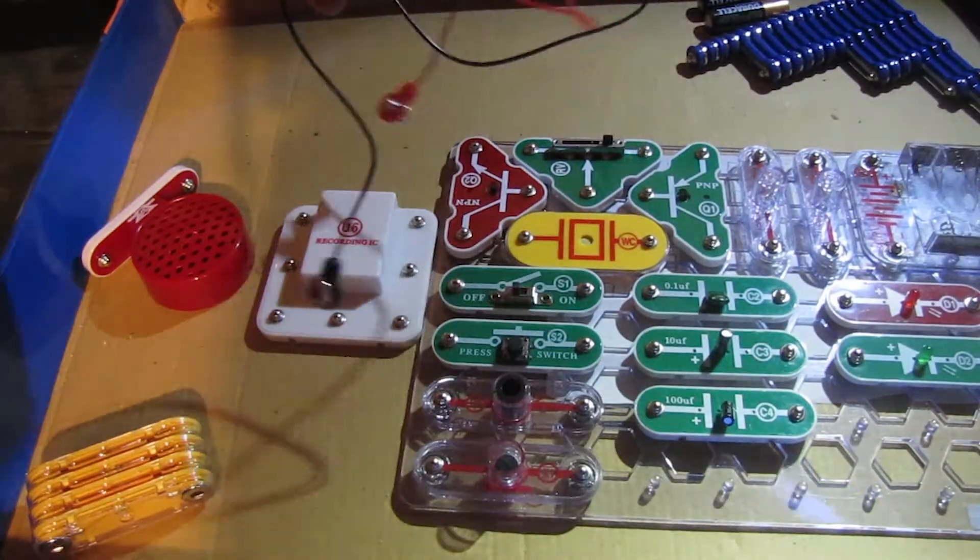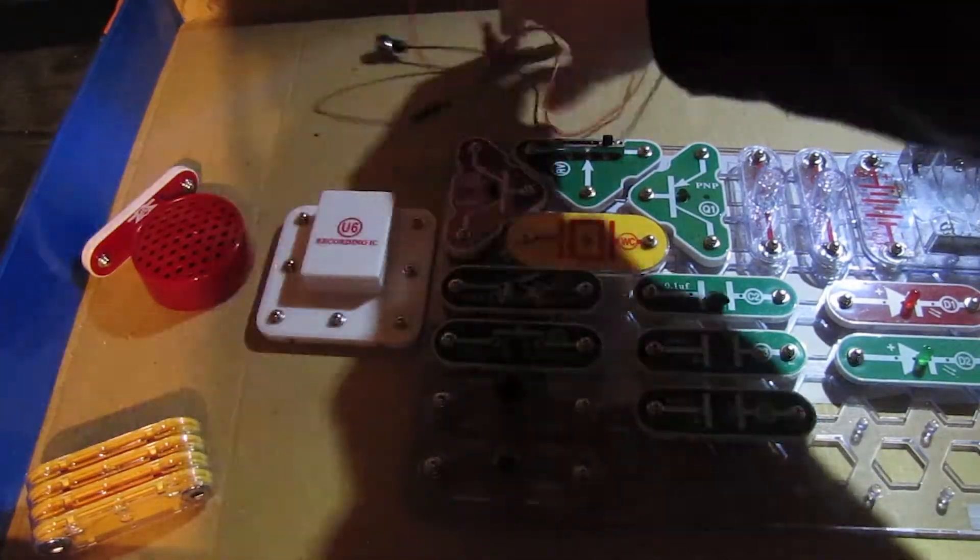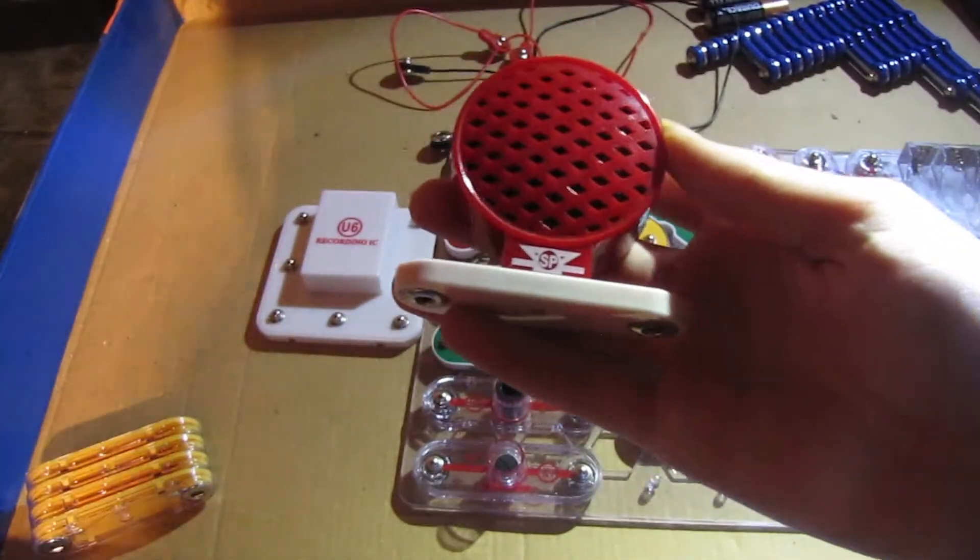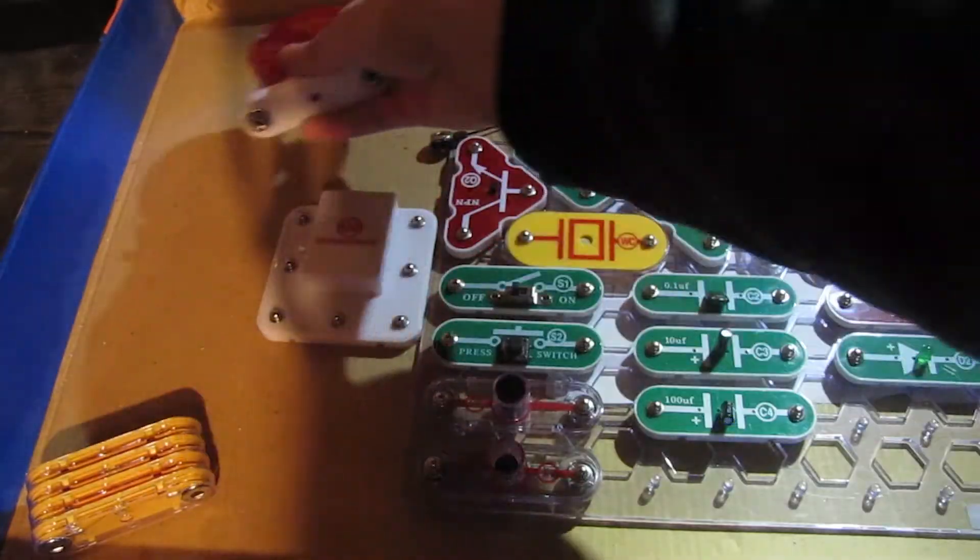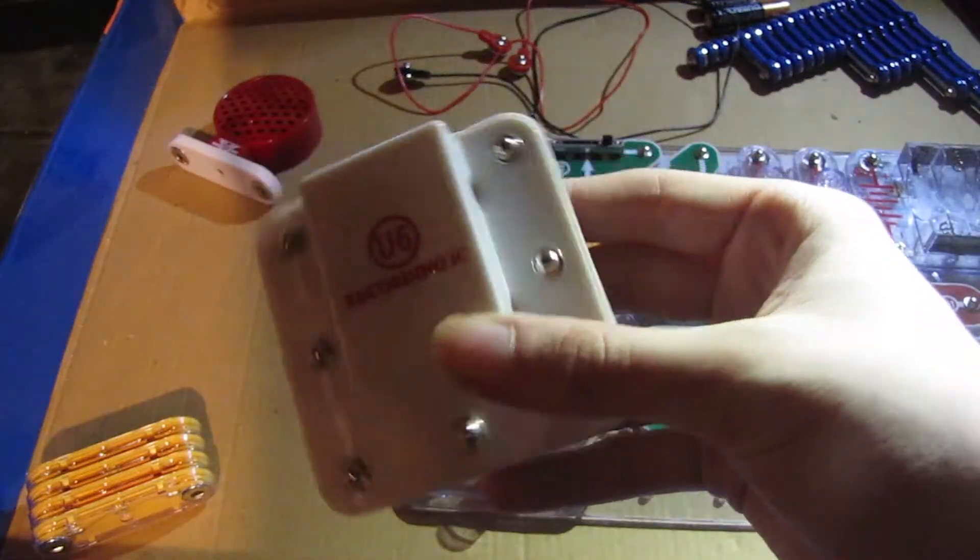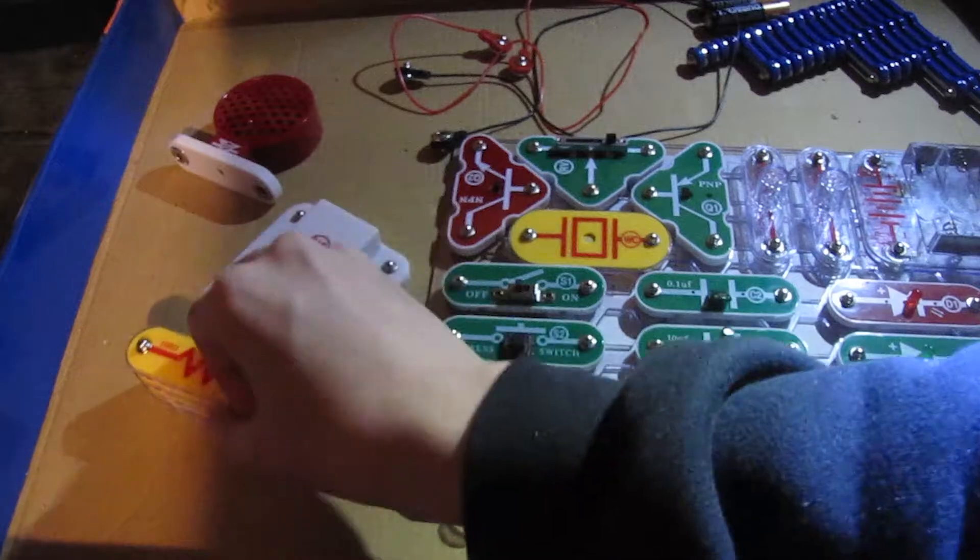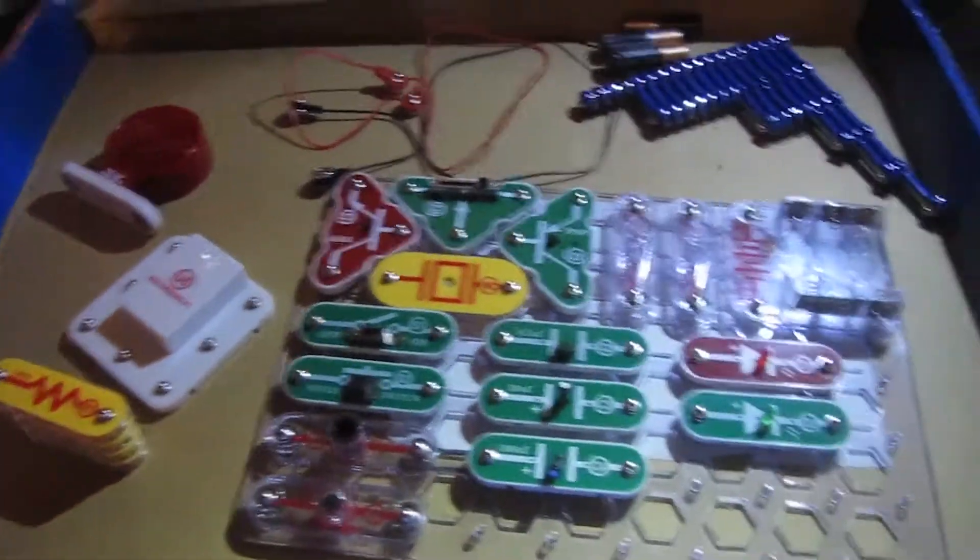Then we got two jumper wires, one red and one black, a speaker which is right here. Let me just get my shadow out of the way. We got a recording IC. We got four fixed value resistors right here.